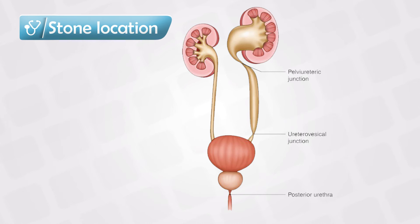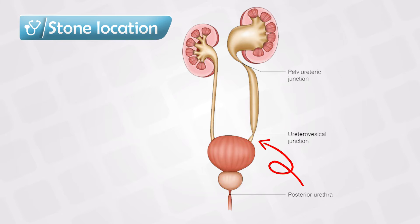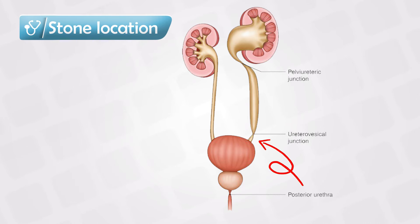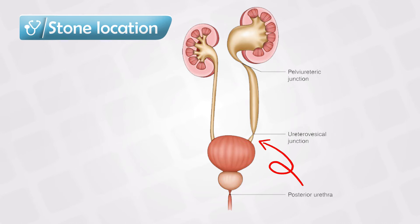Normally the stone forms in the pelvis and travels down the ureter and out through the bladder. The most common location where the stone gets stuck and causes obstruction symptoms is the ureterovesicular junction — this is the narrowest area. Stones often get stuck here, which causes backup pressure and dilatation of the ureter as well as the kidneys, and eventually if untreated it will cause an infection which we call pyelonephritis.